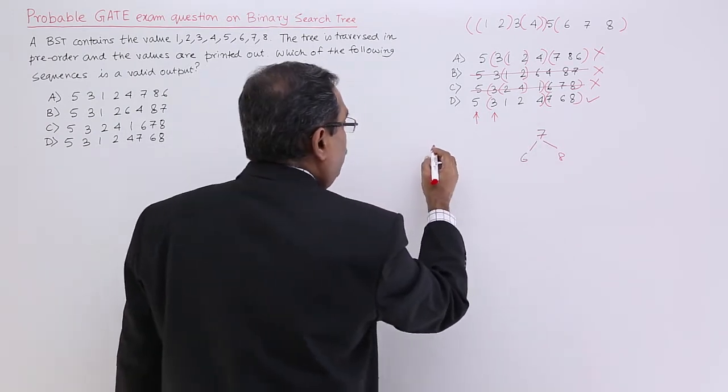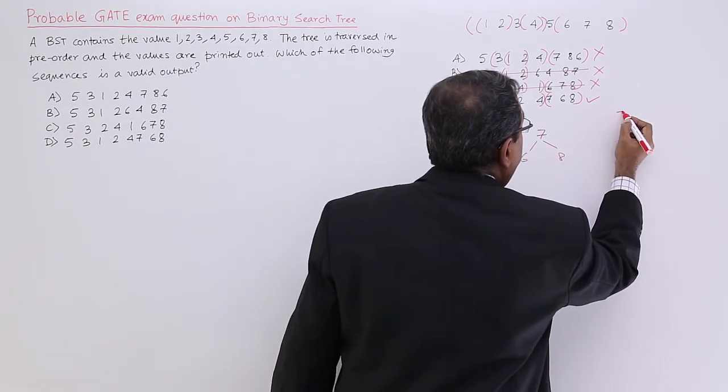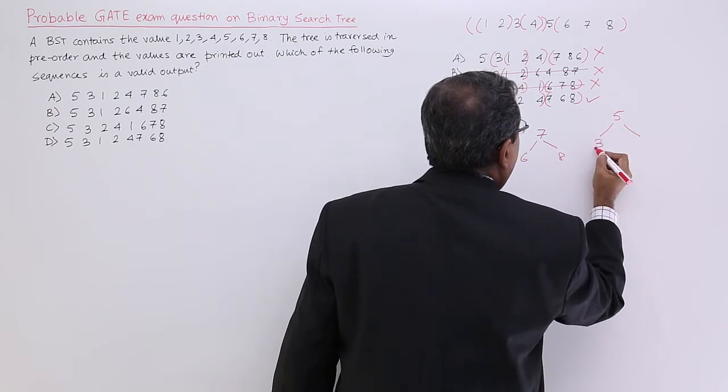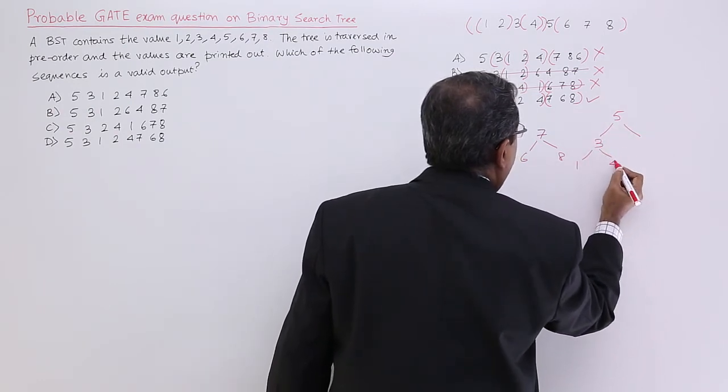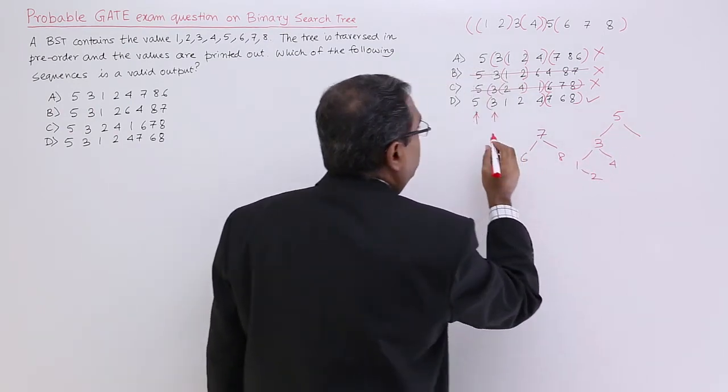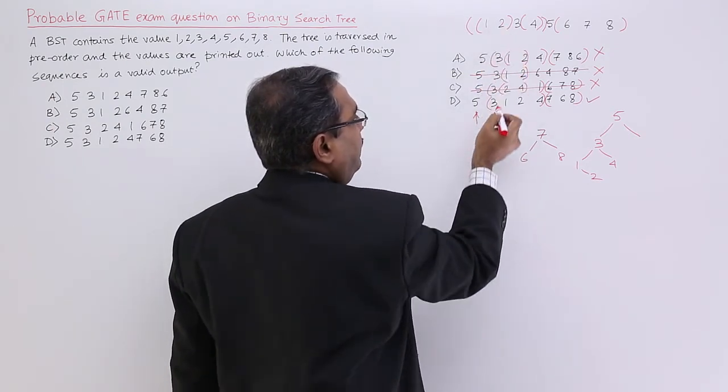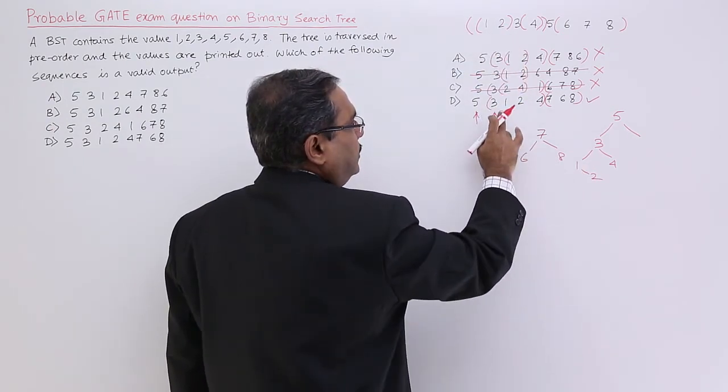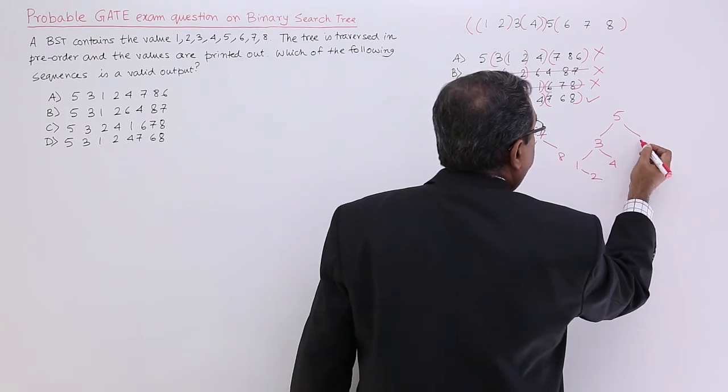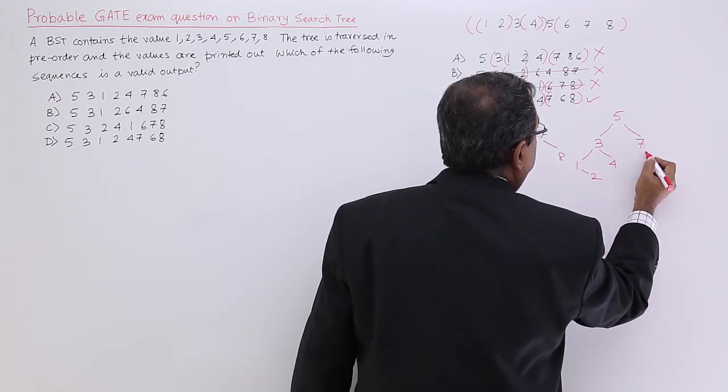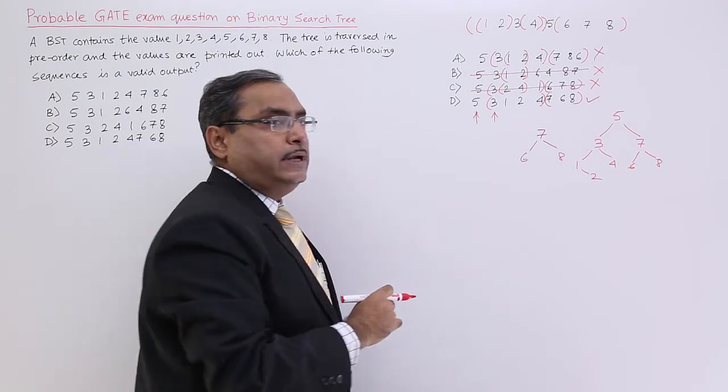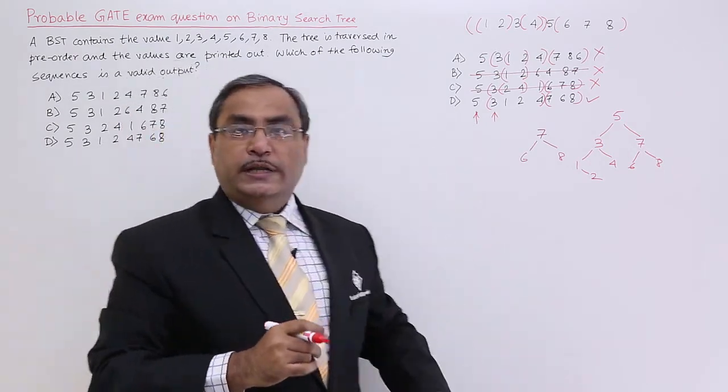If you ask me to draw the tree here, I can draw it in this way. So 5 will be the root, 3. It will be 1, 4 and that will be 2 here. I am getting from here and from here. I can easily write this. Now I am going for this one. So it will be like 7 and then 8 and that will be 6. So that is the actual tree there. So I shall be going for the option of D.